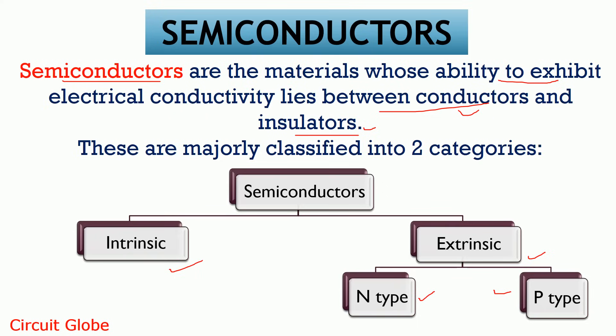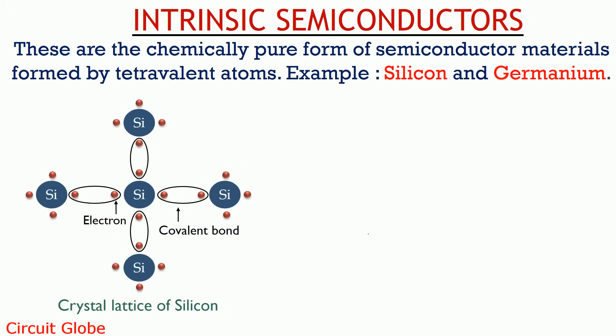Let's first understand what are intrinsic semiconductors. Intrinsic semiconductors are pure form of semiconductor materials, and these are formed by tetravalent atoms. We know tetravalent atoms or group 4 elements contain 4 electrons in their valence shell. The examples are silicon and germanium.